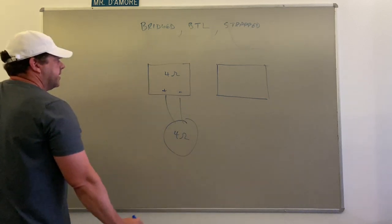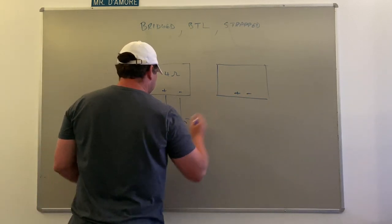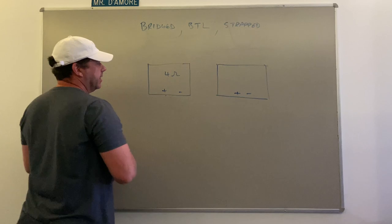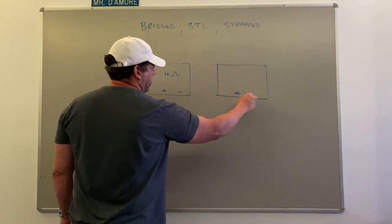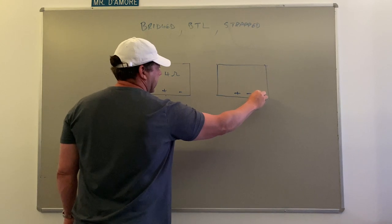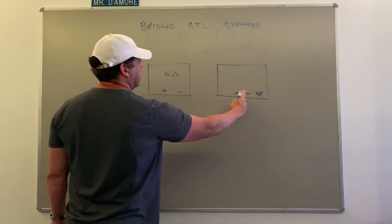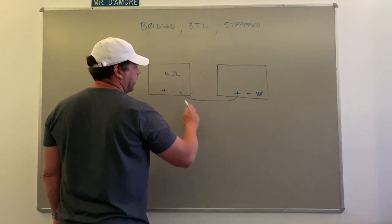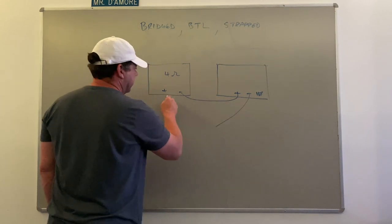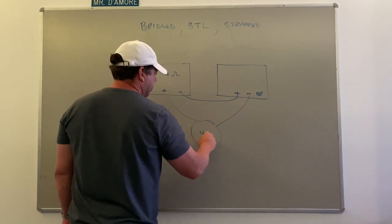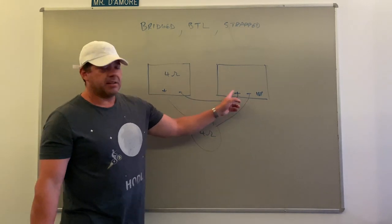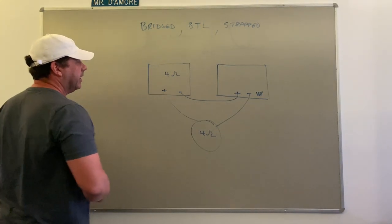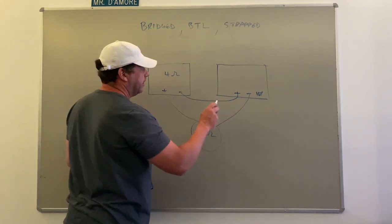Now if instead I have two amplifiers and I'm going to bridge them or strap them, basically what ends up happening is this amplifier, you will feed it 180 degree out of phase signal, so basically those are flipped. These tie together and this and this go to your speaker, 4 ohms.